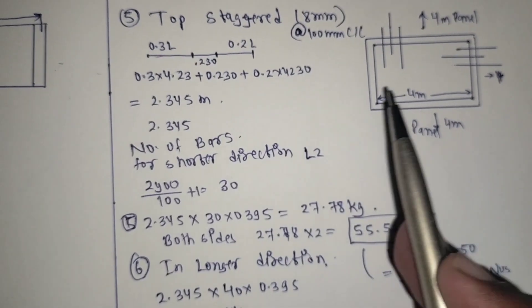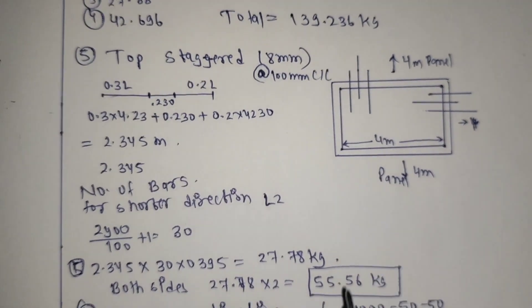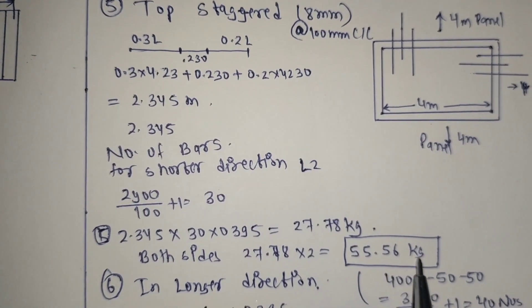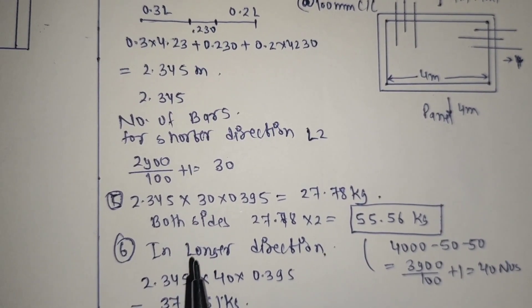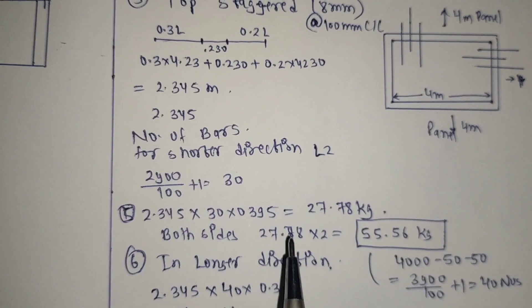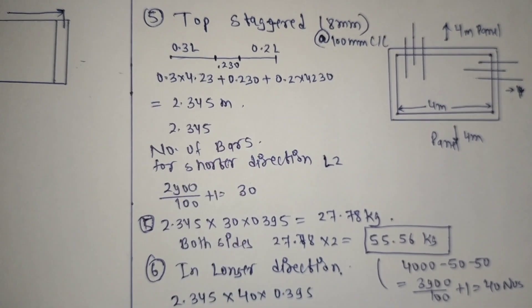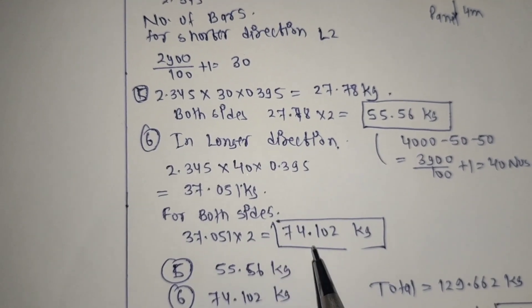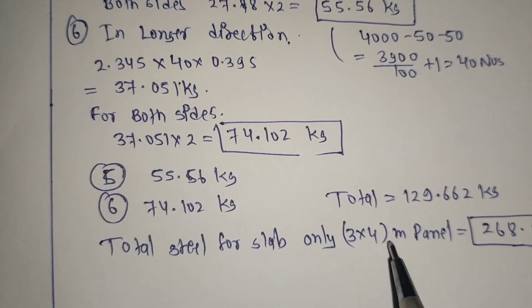Both sides we have to provide it — from both this side and from both that side. So 2.34 into 30 into 0.395 gives 55.56 kg. In the longer direction we take 2.35 — the same length — because the longer length is for the 4 meter panel, so 0.2 x 2 x 4.23. With the same unit weight 0.395 for both sides, we get 74.102 kg.